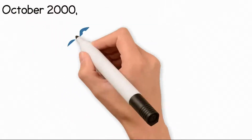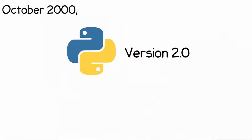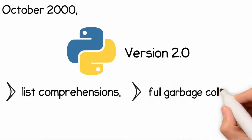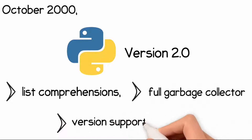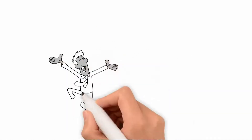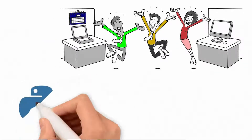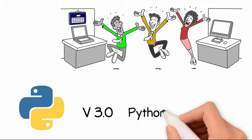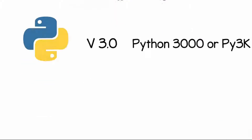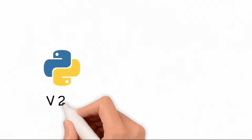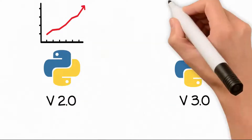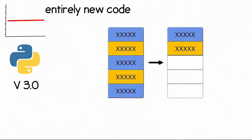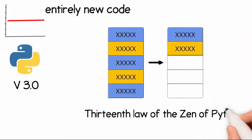In October 2000, Python version 2.0 was released, featuring list comprehensions, a full garbage collector, and Unicode support. After an additional eight years, Python released its next major version, version 3.0, also known as Python 3000 or Py3k. Unlike previous versions, Python 3000 was not an update but entirely new code that removed duplicate constructs and modules, in an attempt to fulfill the 13th law of the Zen of Python.